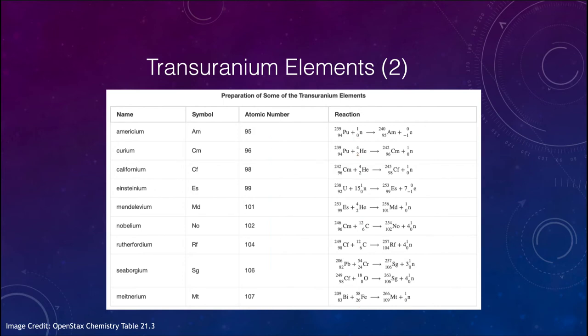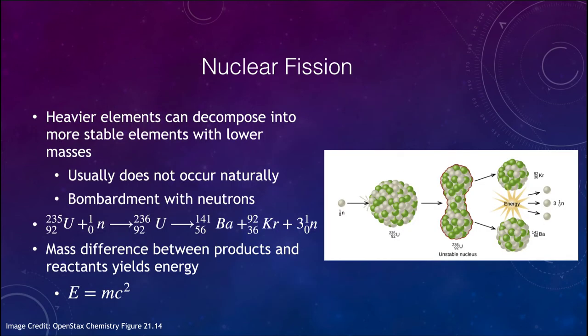So let's go ahead and look at nuclear fission here. Nuclear fission occurs when heavier elements decompose into more stable elements that have a lower mass. So this is something that is not normally a natural occurrence. And that does not mean that the elements do not decay by the ordinary alpha and beta decays that we've talked about previously. But this is actually a splitting of one heavy nucleus into two similar nuclei of much lower mass. So we can do this by bombarding nuclei with neutrons.